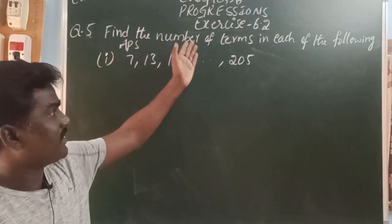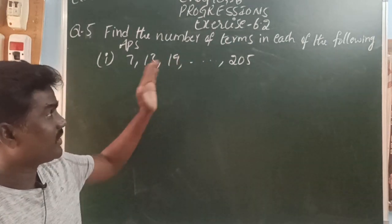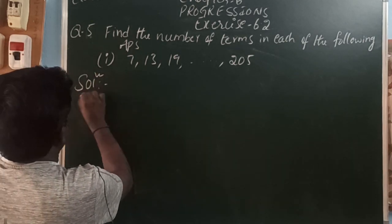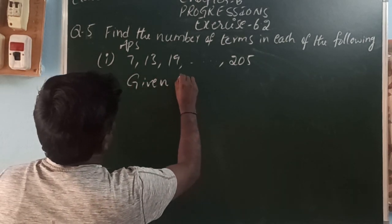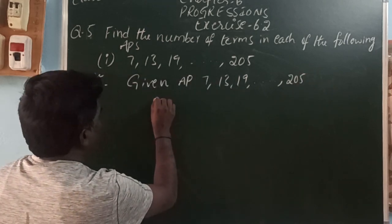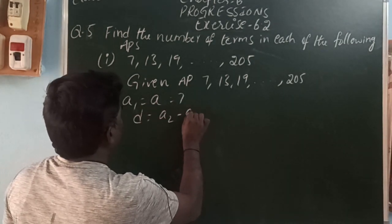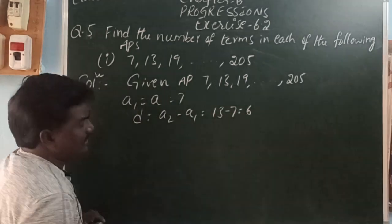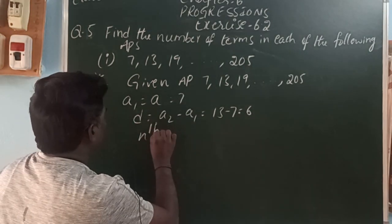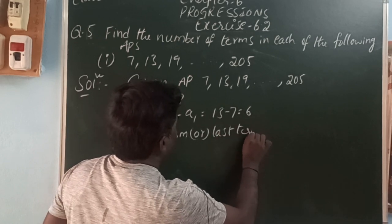Next, question number 5: find the number of terms in each of the following. First one: 7, 13, 19 and so on 205. So the number of terms of the given AP — we can find by using nth term. Here the given AP is 7, 13, 19 and so on 205. Here A1 is equal to A is equal to 7. Common difference D is equal to A2 minus A1: 13 minus 7 is equal to 6. So here how many terms? They are asking the number of terms. By using nth term, the last term is 205.